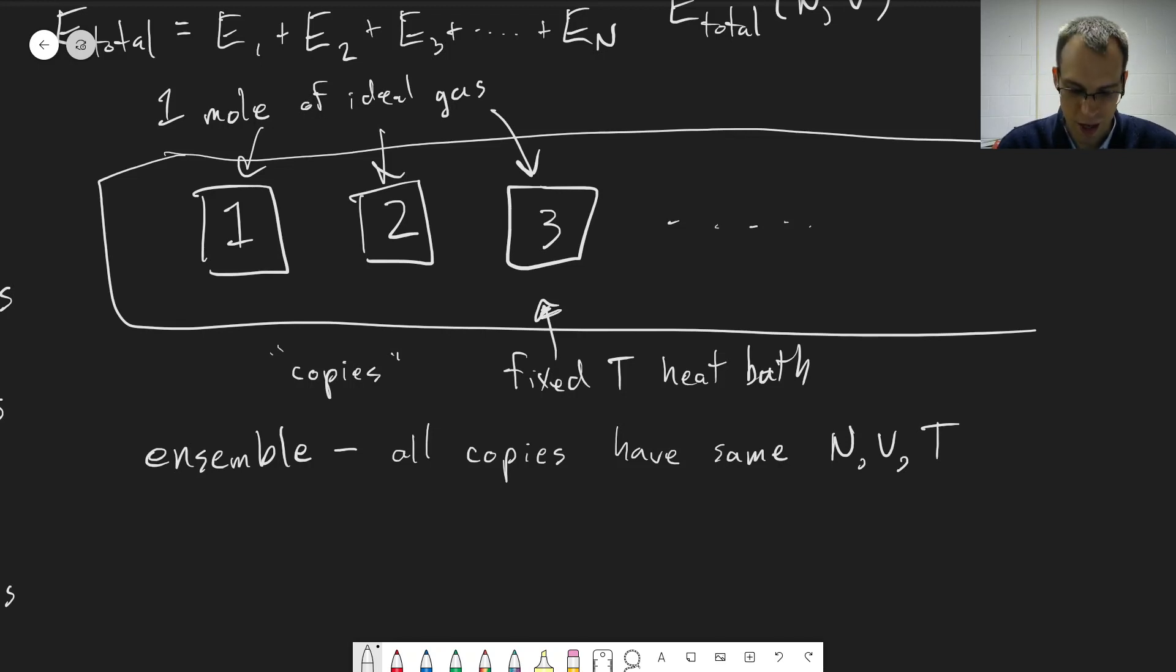So for example, say in copy one, particle one has an energy of, to pick a number out of a hat, 1 times 10 to the minus 19 joules. Just because it's going to be a really small number because it's just one particle. But in state two, it has 2 times 10 to the minus 19 joules. In state three, maybe it has 1.5 times 10 to the minus 19 joules. Right? The individual particles will differ between all of these different copies.